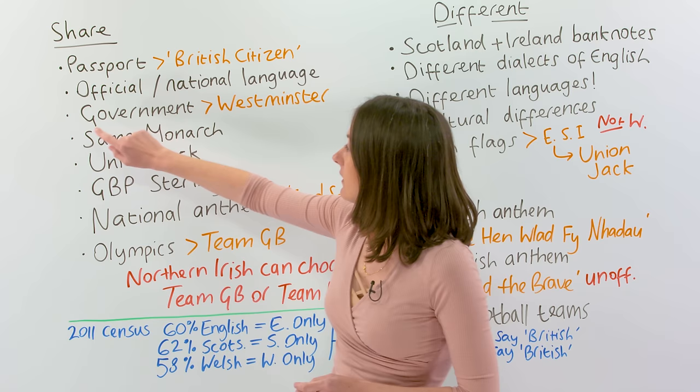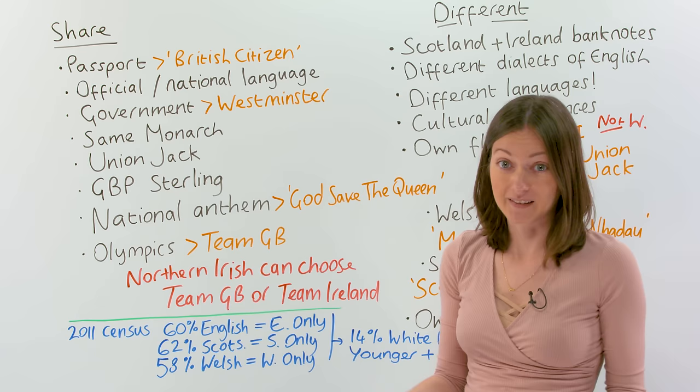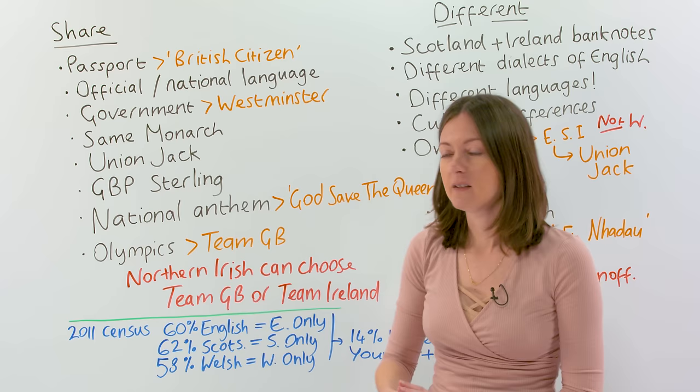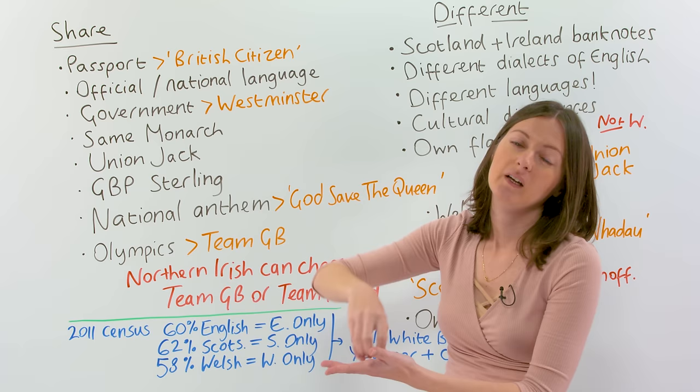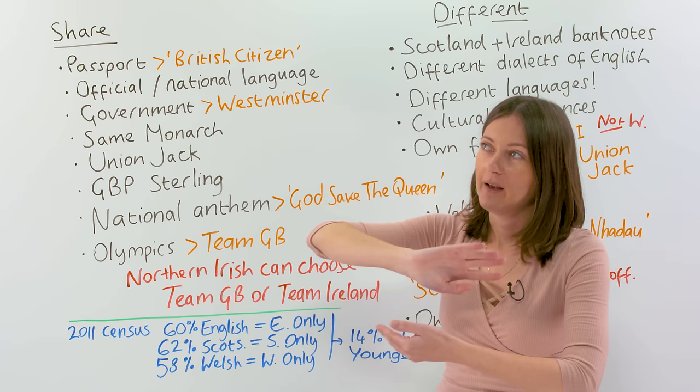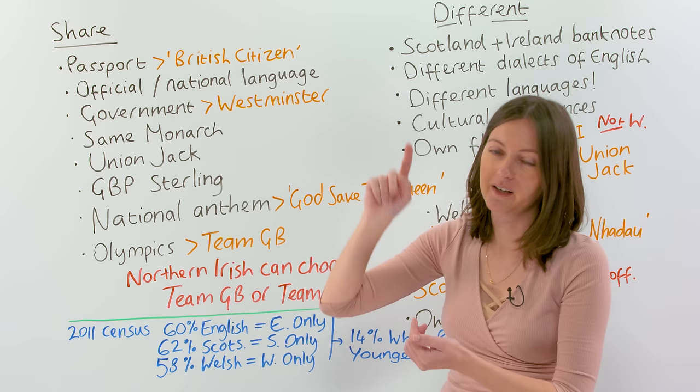We have the same official and national language, which is of course English. We have the same government, and the government is in Westminster, in London — the Houses of Parliament. So where the laws are made in Westminster, they are sovereign over all the laws made in... I was going to mention it later, but Scotland and...